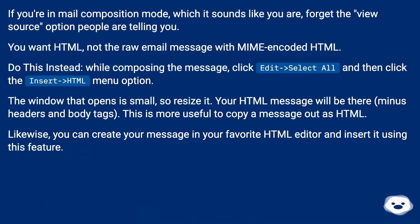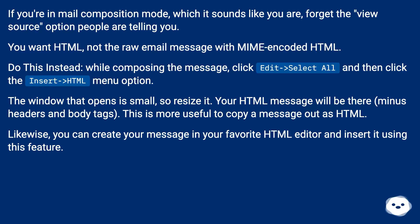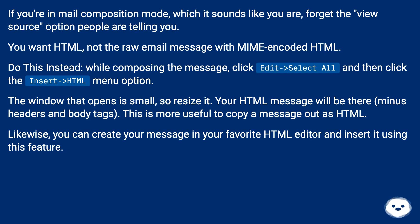If you're in mail composition mode, forget the View Source option people are telling you. You want HTML, not the raw email message with MIME-encoded HTML. Do this instead: while composing the message, click Edit > Select All, and then click the Insert > HTML menu option. The window that opens is small, so resize it. Your HTML message will be there, minus headers and body tags. This is more useful to copy a message out as HTML.